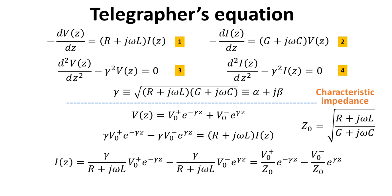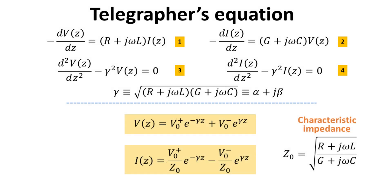Here we have introduced a new parameter Z0, which is called the characteristic impedance, also defined in terms of the line parameters. In summary, we have obtained the general solutions of V and I along the transmission lines, expressed in terms of V0-plus and V0-minus, unknowns which we will have to determine later. Note that we are still in the phasor domain.